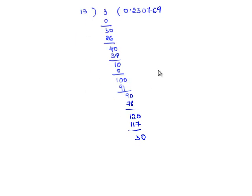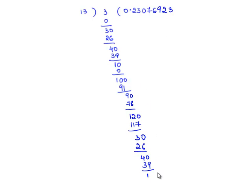Since we are back to remainder 3, the process repeats. 13 goes in 30 two times, 13 times 2 is 26, and we are left with remainder 4. Because of the decimal point, 4 becomes 40. 13 goes in 40 three times, 13 times 3 is 39, and we are left with remainder 1. Because of the decimal point, 1 becomes 10. 13 does not go in 10, so we take 0. 13 times 0 is 0, and we are left with remainder 10.